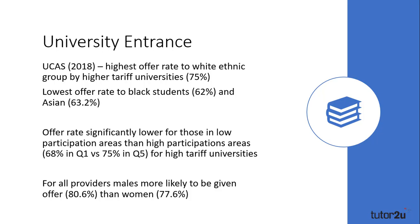Having seen the trends of achievement, it might be expected these would be mirrored in university admissions. UCAS data for 2017-2018 demonstrated some differences. While lower-tariff universities are fully inclusive, higher-tariff universities — the Russell Group and Oxbridge — are more likely to make an offer to a white person than any other ethnic group, despite white students underperforming compared to some other groups. 75% of white applicants to high-tariff universities received an offer, compared to 62% of black students and 63.2% of Asian students.